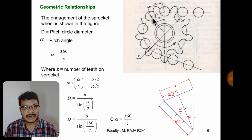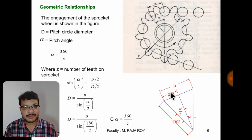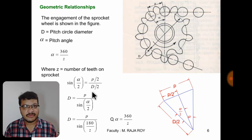Now I will take this triangle, drawing it separately. The total angle is alpha; if you draw a perpendicular, half of it becomes alpha by 2. Using this right-angle triangle with angle alpha by 2, we derive the relation for pitch circle diameter d. sin(alpha/2) equals opposite side p/2 divided by hypotenuse d/2, giving d = p / sin(alpha/2). Substituting alpha = 360/z, we get d = p / sin(180/z).